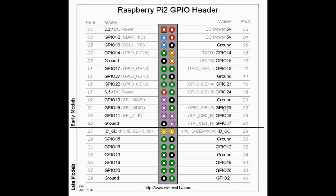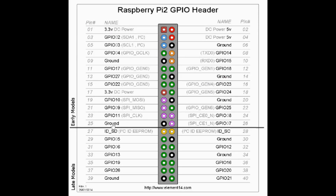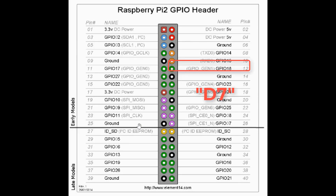Those last two pins, pin number 15 and pin number 16, are for the backlight. Pin number 15 we connect to 3.3 volts, then pin number 16 of the LCD we take to ground.